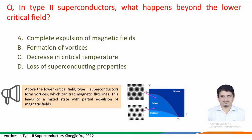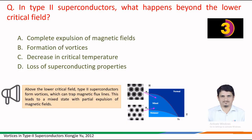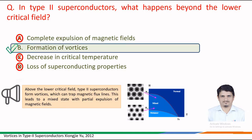To answer this question, we must remember that above the lower critical field, type 2 superconductors form vortices which can trap magnetic flux lines. This leads to a mixed state with partial expulsion of magnetic fields. Therefore, the correct answer is option b — in type 2 superconductors, there is a formation of vortices beyond the lower critical field.